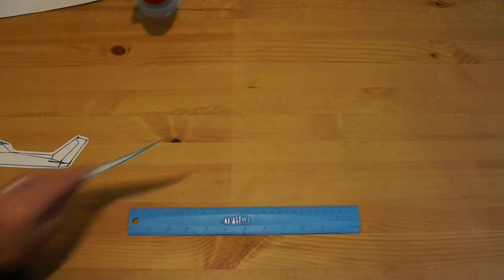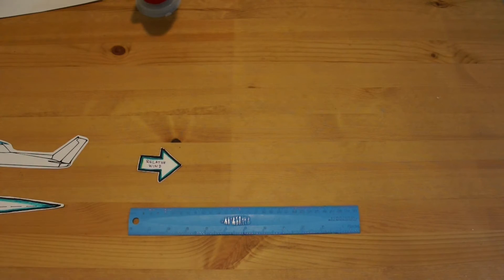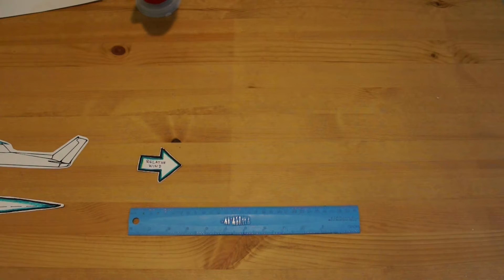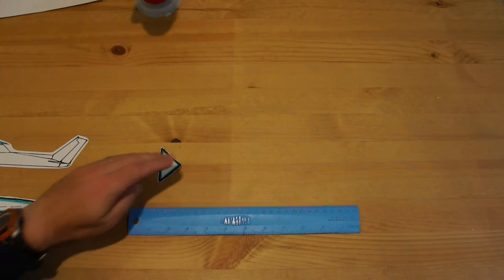That's also demonstrated here in this other graphic that I made with a marker, and this arrow that demonstrates the direction of the relative wind in terms of where the aircraft is going.